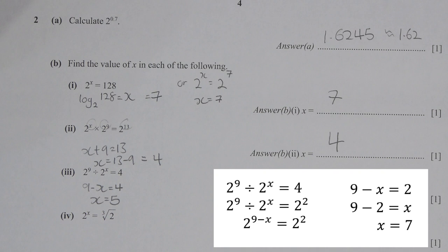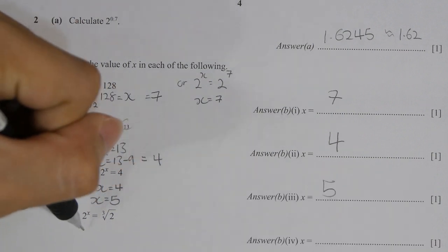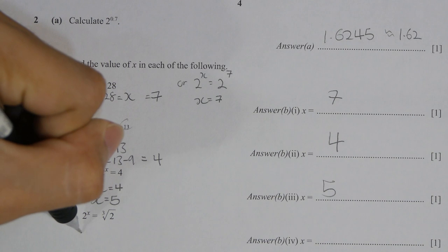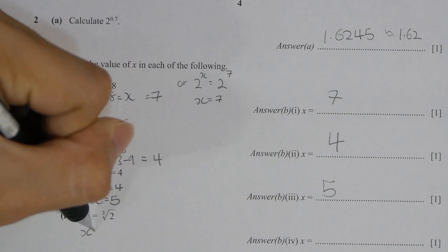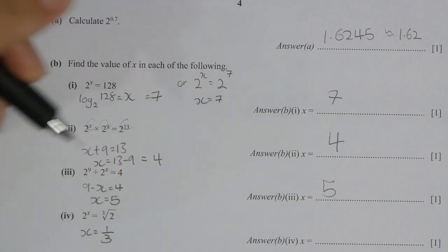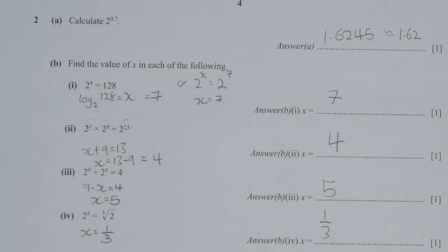The result will be x equals 7 — note there is a correction here, it should be 7 not 5. For the next one, I changed the square root into 2 to the power of 1 over 3, so x equals 1 over 3 immediately.